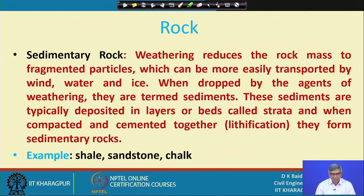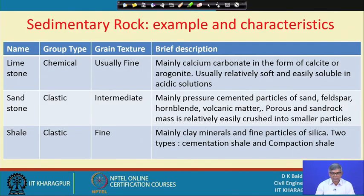Next is sedimentary rock. Weathering reduces the rock mass to fragmented particles which can be more easily transported by wind, water, and ice. When dropped by the agents of weathering, they are termed sediments, and these sediments are typically deposited in layers or beds called strata, and when compacted and cemented together they form sedimentary rock. Examples in this category include limestone, sandstone, and shale.